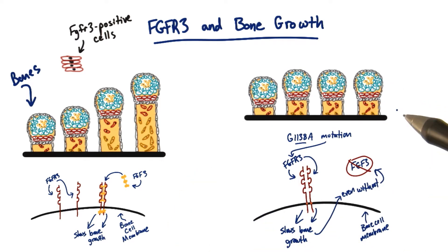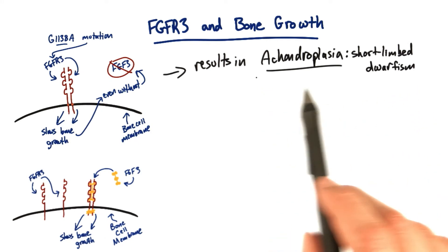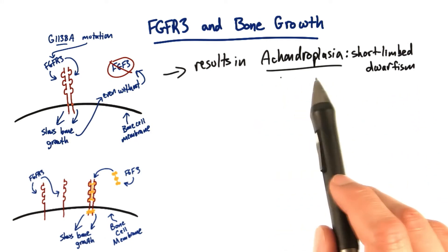The net effect are bones that grow shorter than they normally would, because the FGFR3 protein is slowing bone growth down even when the FGF3 isn't around. This protein is sort of always on now. Overall this results in a form of short limb dwarfism called achondroplasia.